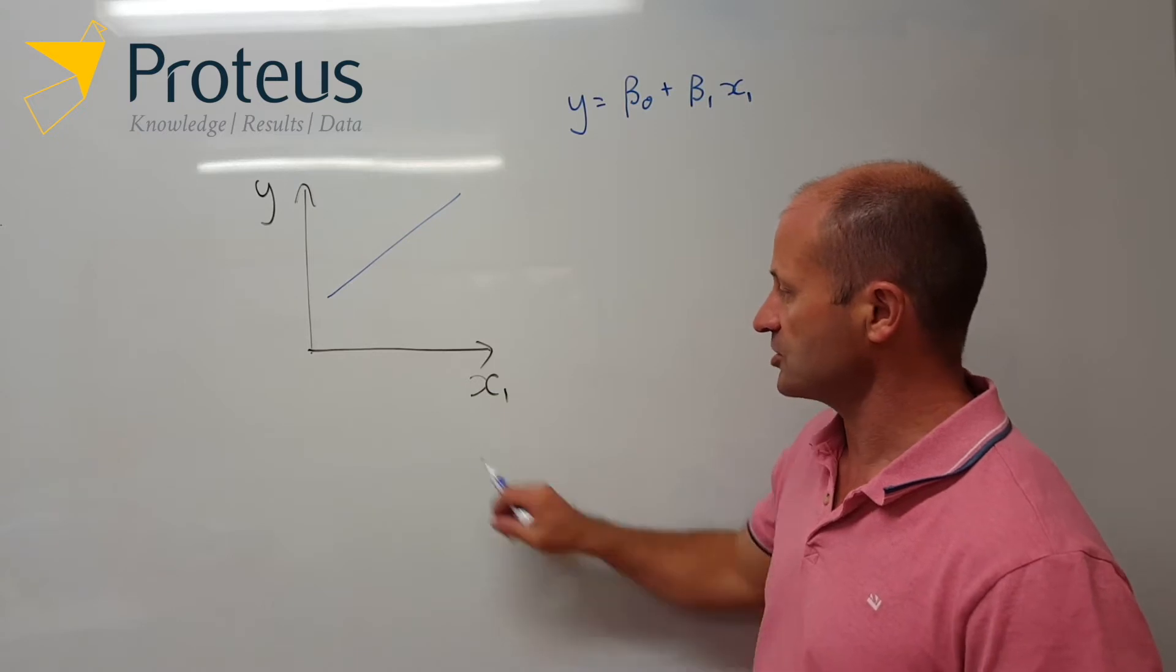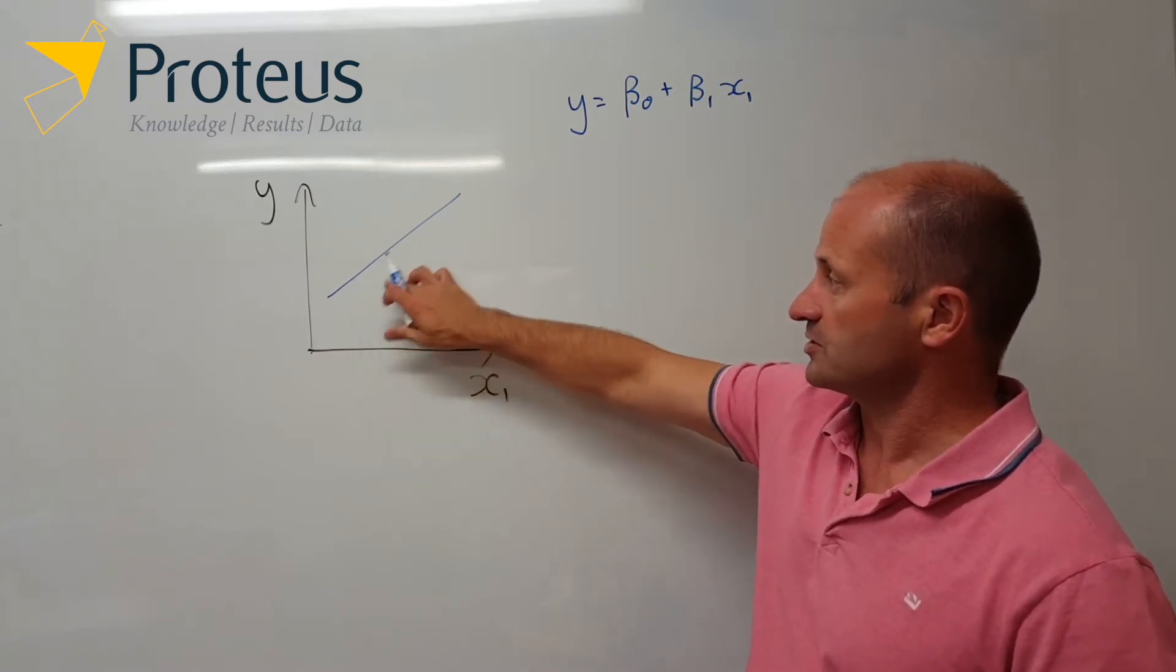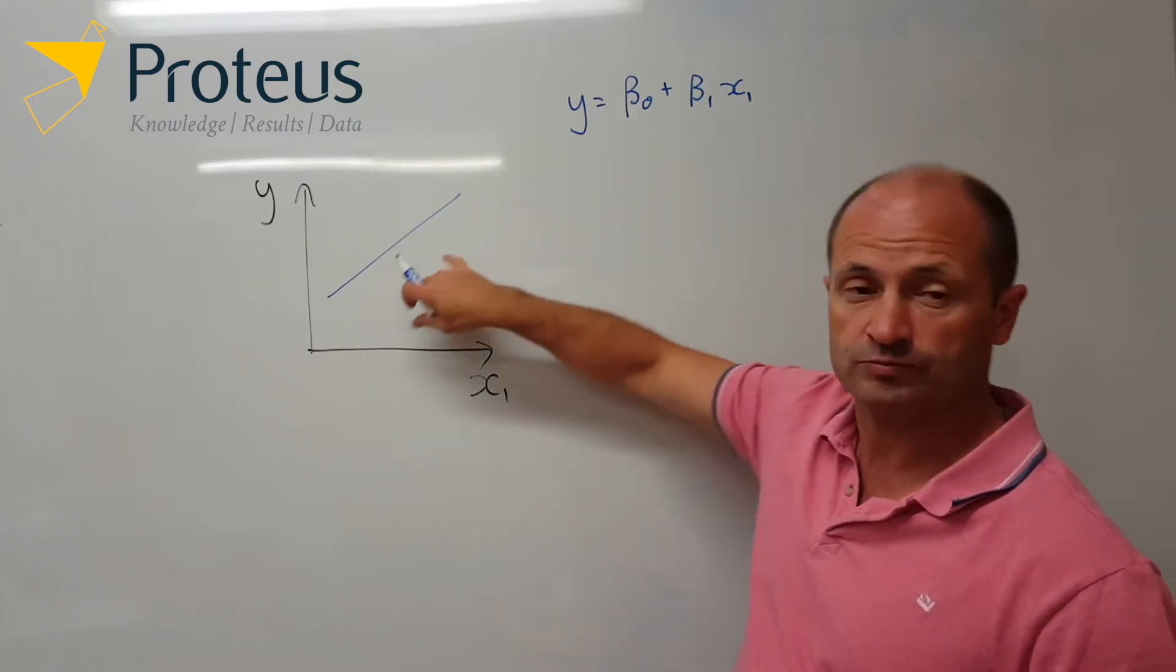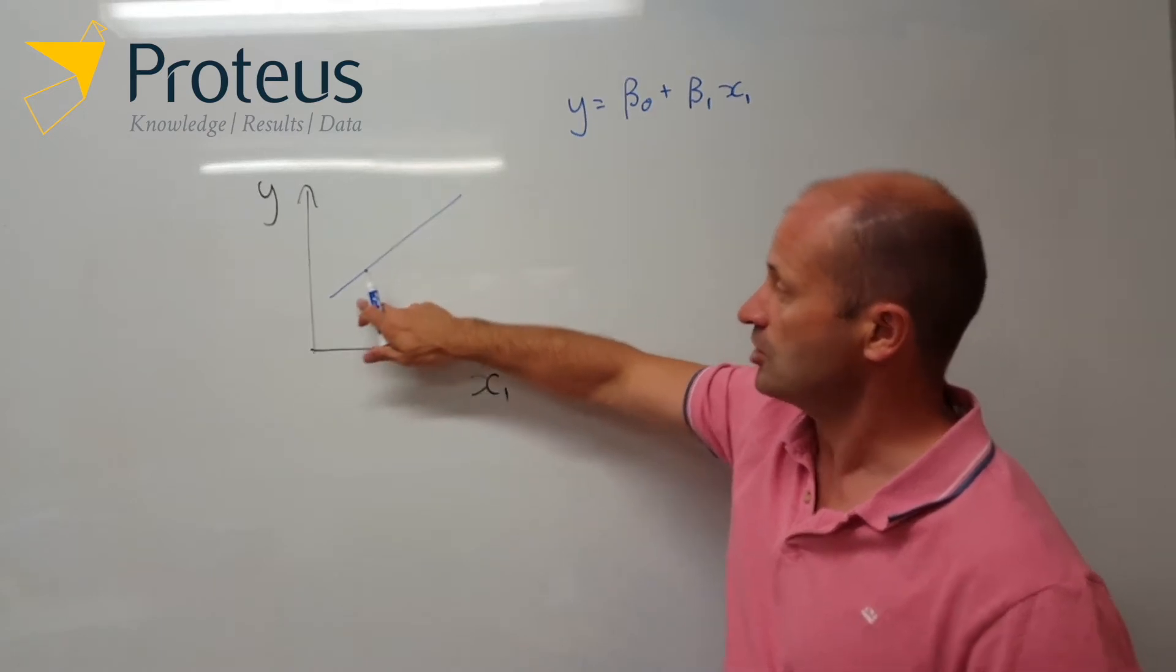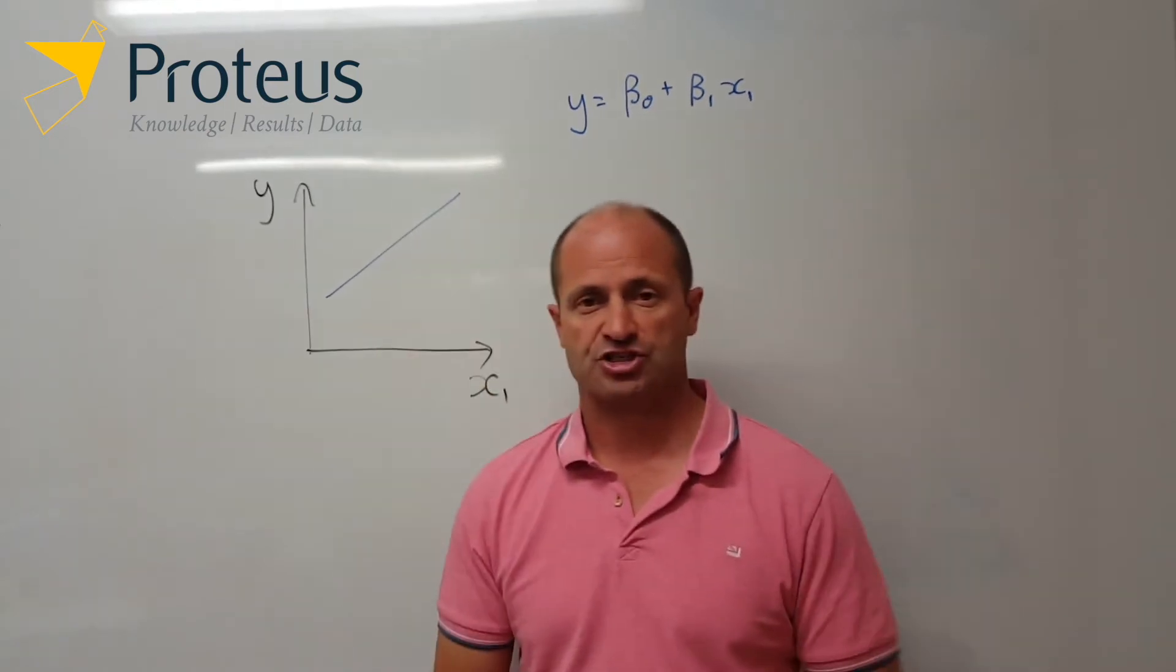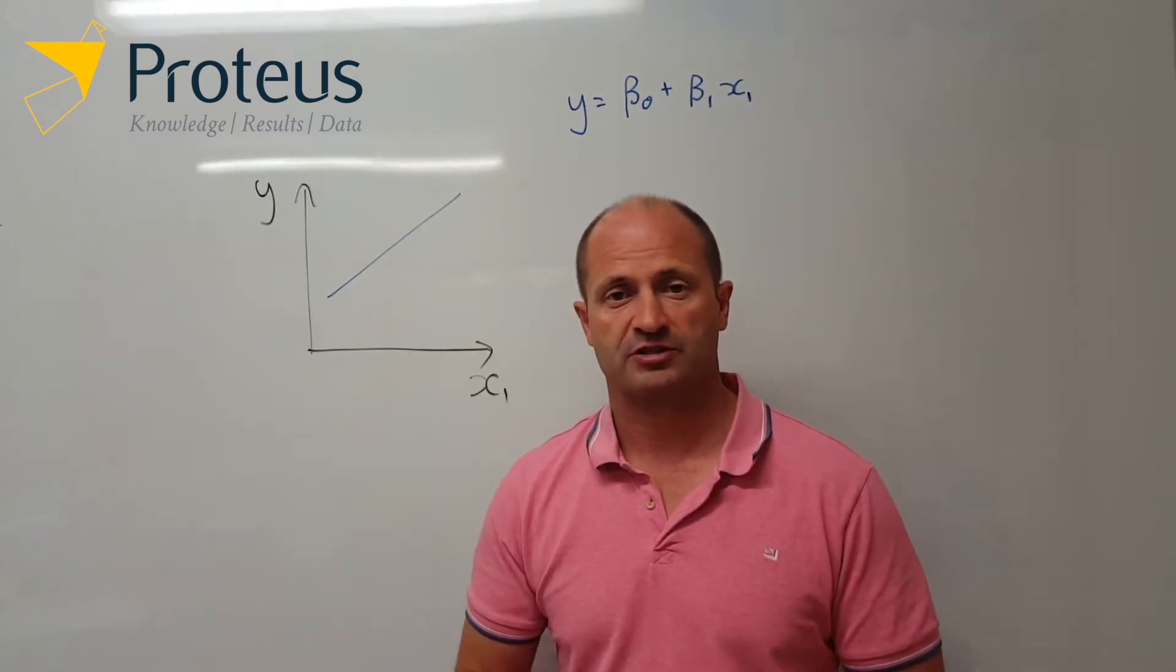What we're saying is that when we have a single predictive variable of interest, we expect with this sort of regression model, some sort of linear relationship between our response and that predictive variable.